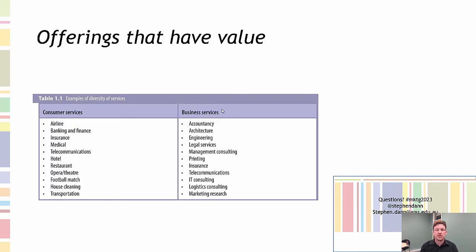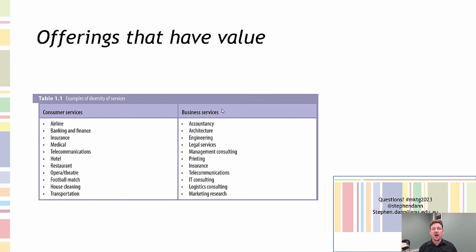Let's talk about offerings that have value. Across services there are many different types and service products. It's really important to get a couple of terminologies down early. One of them is that it's 'goods and services,' not 'products and services.' Products are the offerings that have value. Goods and services are the means by which you create products that have value.